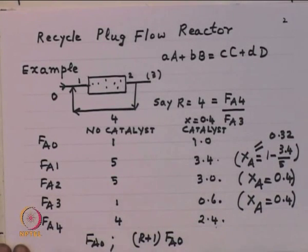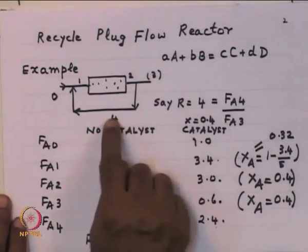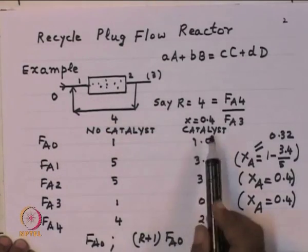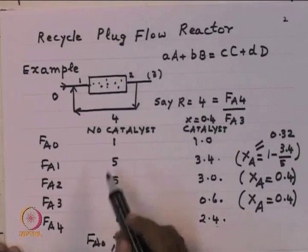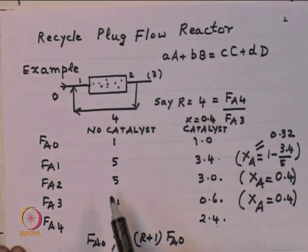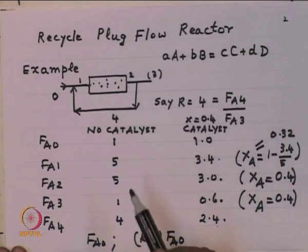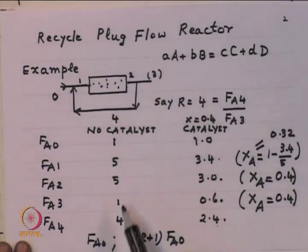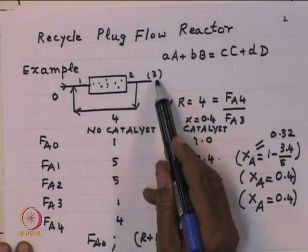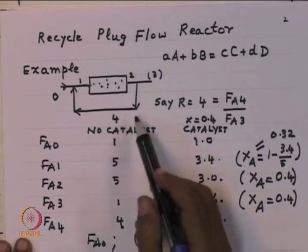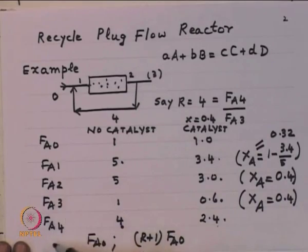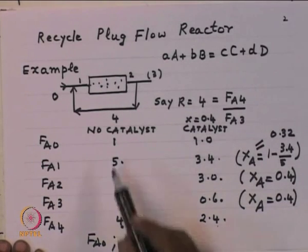To make it easier, I have taken positions 0, 1, 2, 3, and 4 to indicate different positions in the equipment, and two instances: one where there is no catalyst in the reactor and one where there is a catalyst. For case 1, no catalyst, with recycle ratio R = 4 and F_A0 = 1: F_A3 = 1 (what comes in must go out), F_A4 = R × F_A3 = 4, and F_A1 = F_A0 + F_A4 = 5. There is no reaction, so these are the flows at different positions.